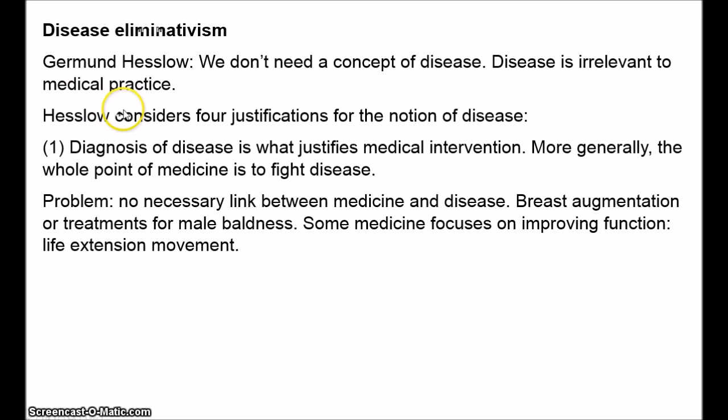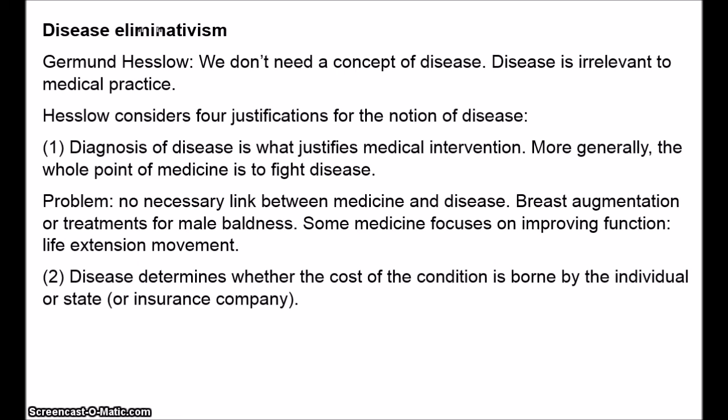The second suggestion is that disease determines whether the cost of a condition is borne by the individual or the state—or in places like America, whether borne by the individual or the insurance company. In countries where the government takes care of its citizens, the cost of disease can be borne by the state. Hesslow says this is a mistake. What's covered by the state or insurance companies are general events that are costly, impossible to predict, and outside of an individual's control—and these often don't match up with diseases. Areas in the eye that cause vision problems are clearly diseases, but they're usually mild and relatively cheap to fix—the state isn't going to pay for your eyeglasses.